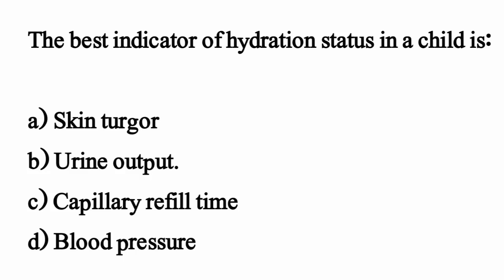The best indicator of hydration status in a child is — the correct option is Option B, urine output.